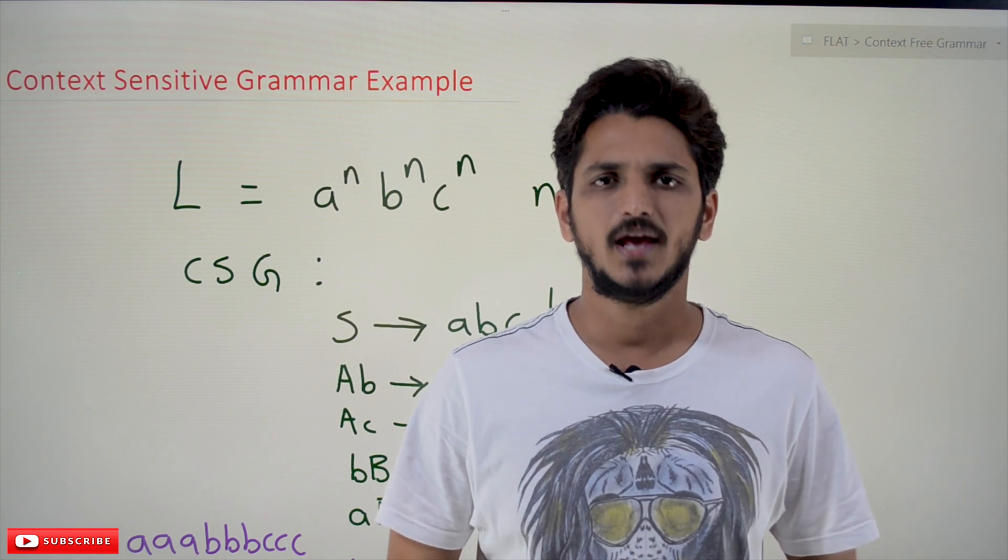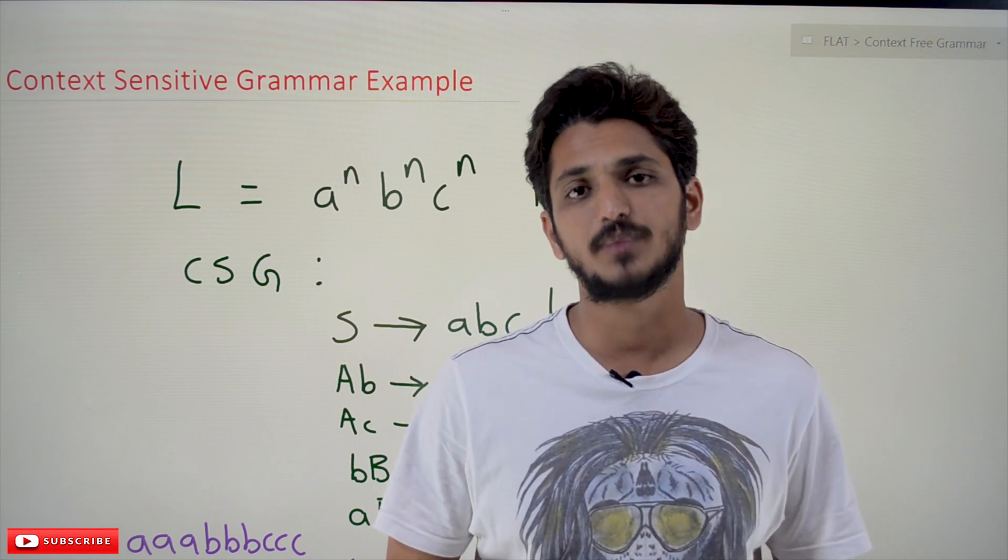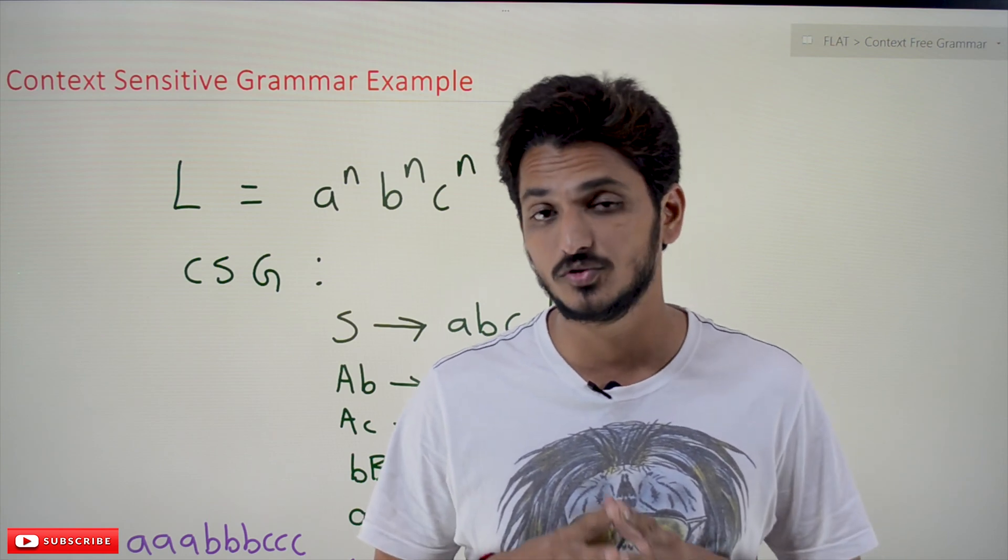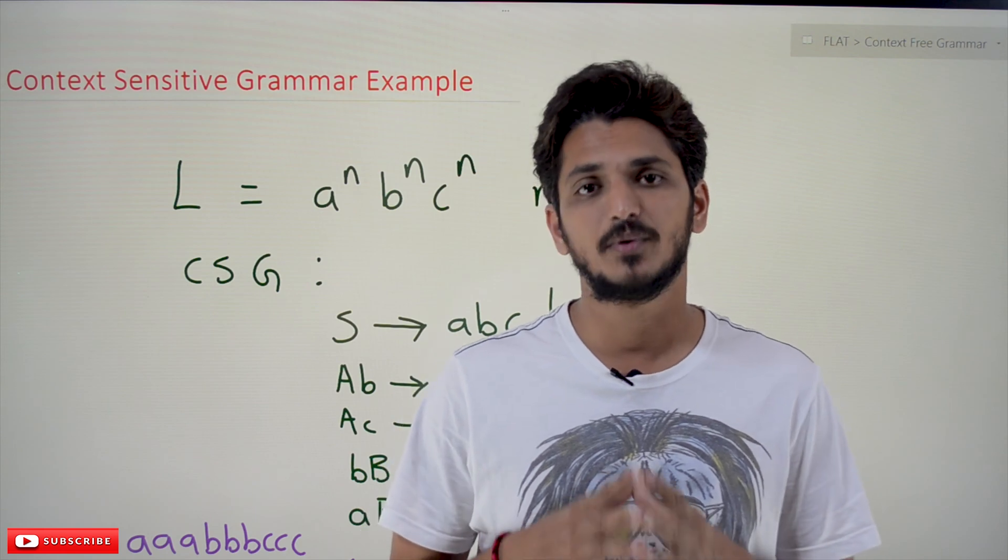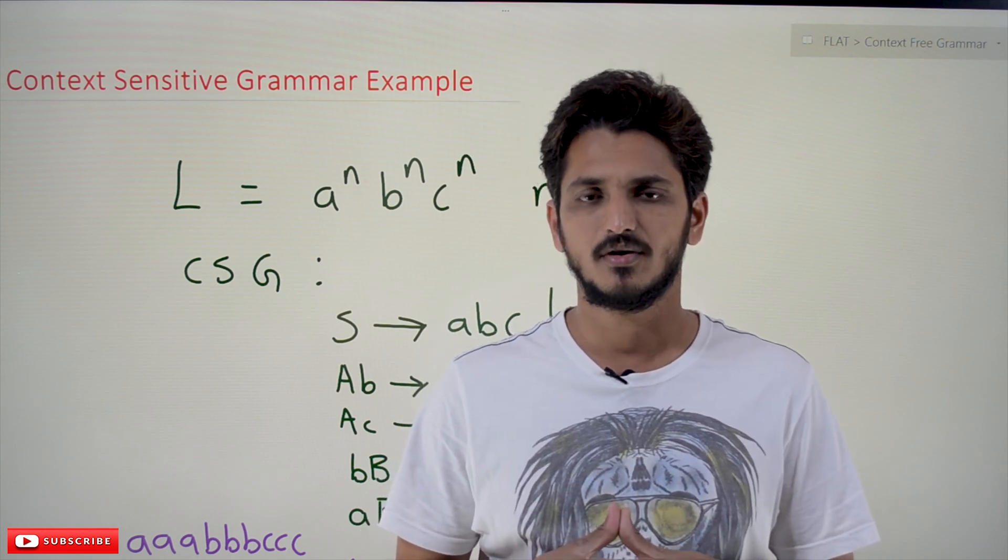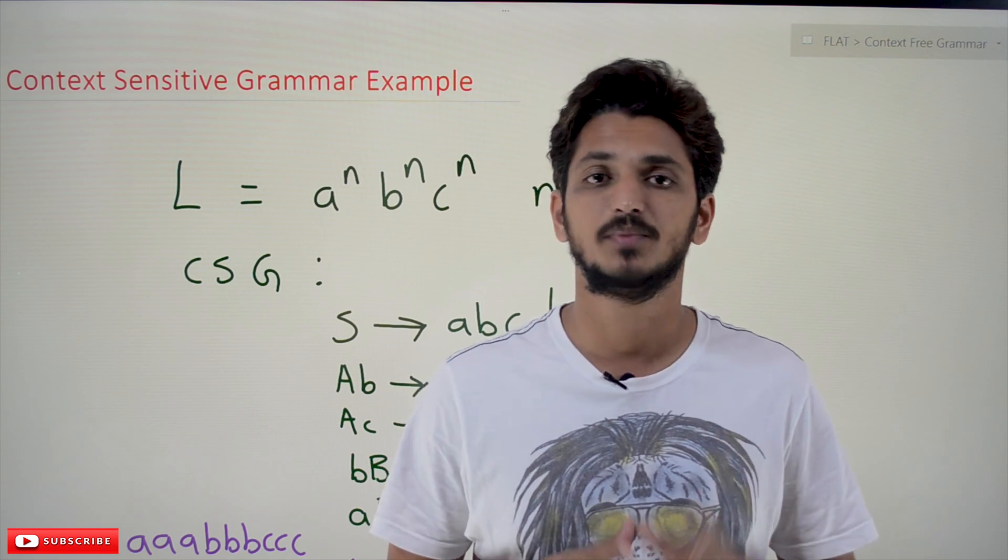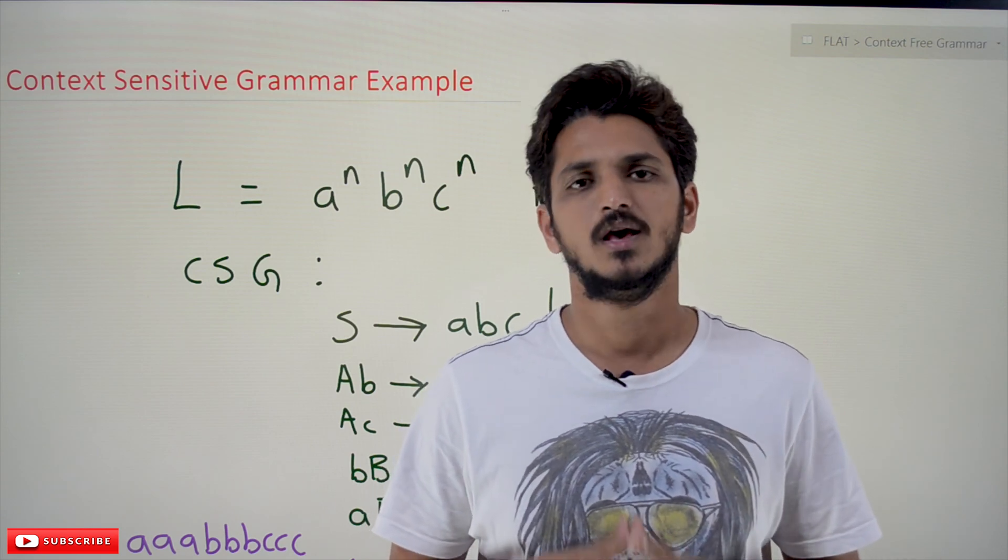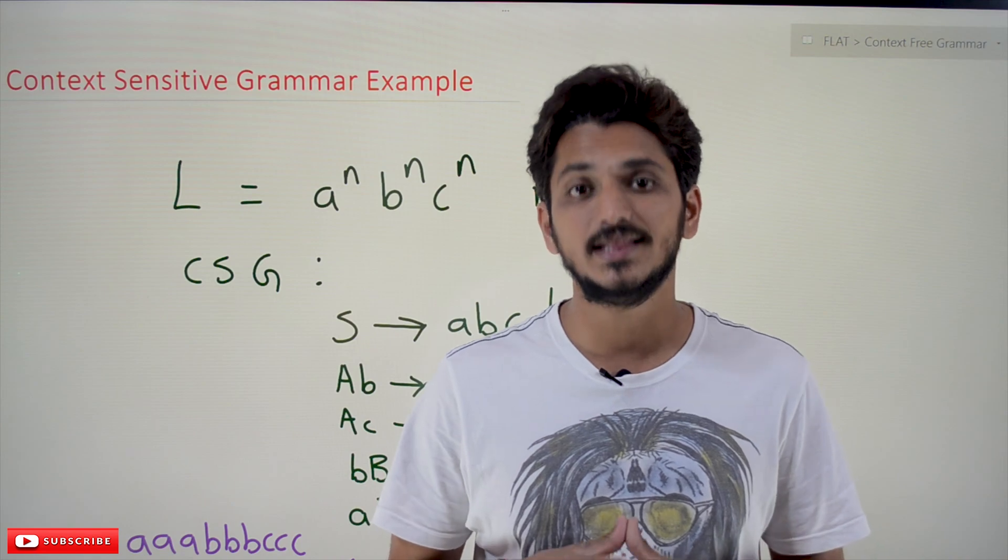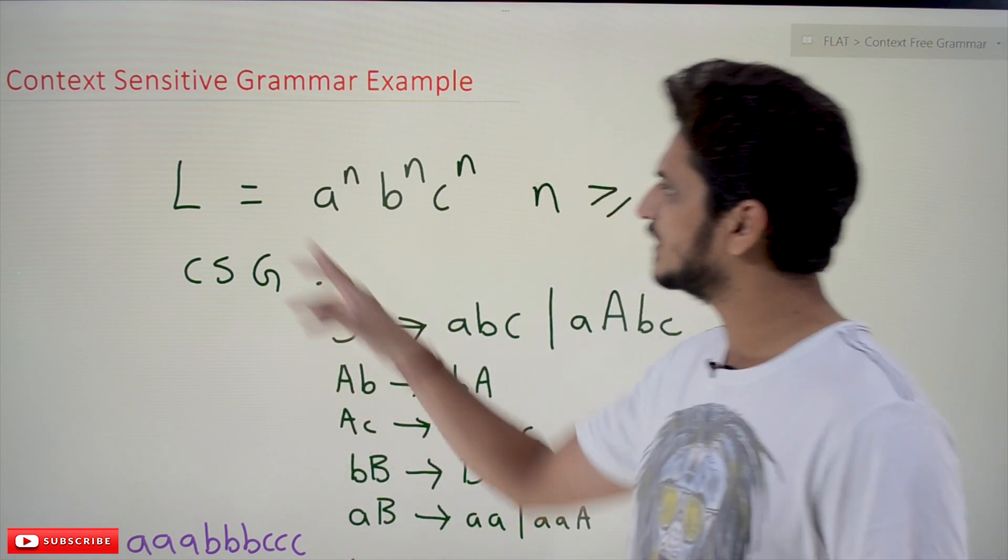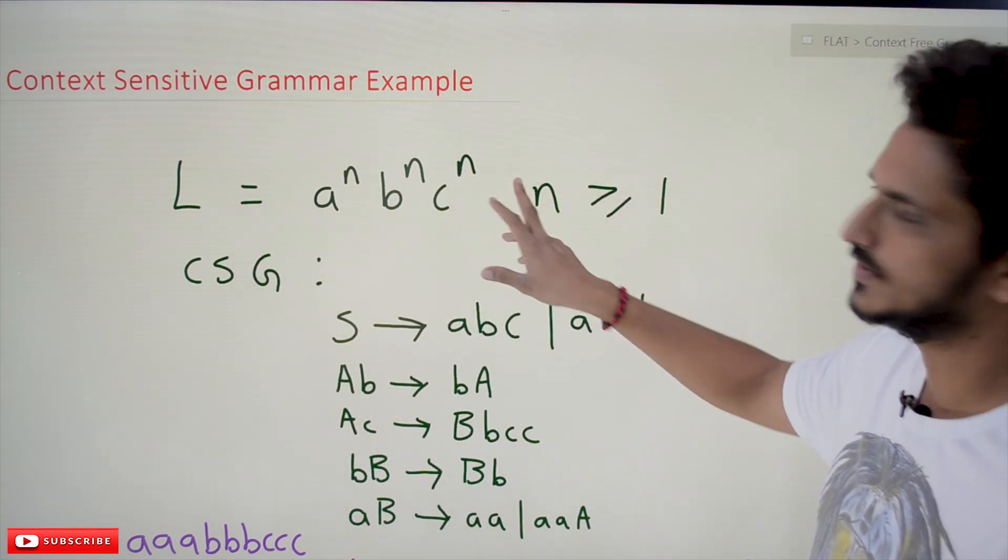Hi, welcome to Learning Monkey. I'm Raghu. In this class, we'll practice an example on context-sensitive grammar. The language is a^n b^n c^n. In our last class, we already discussed context-sensitive grammar. Please watch that class and come back here. The link is in the description below. Today's example: L = a^n b^n c^n.